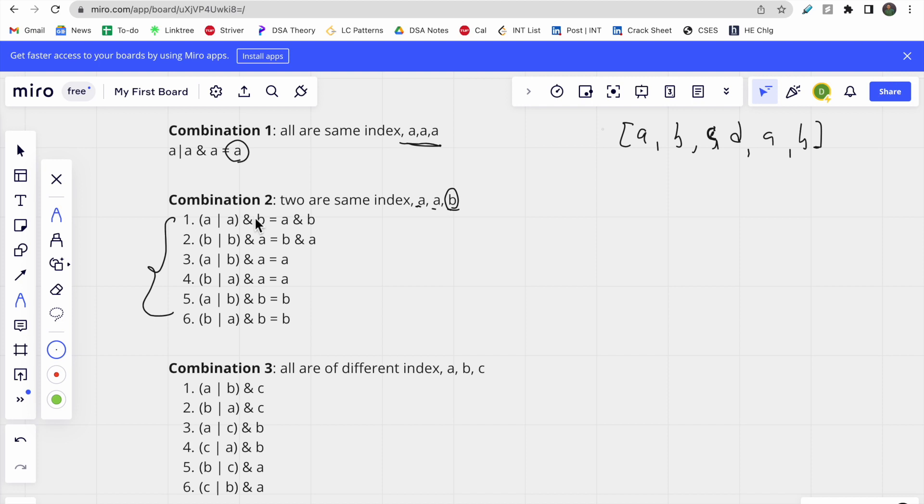The second situation is when two numbers are the same and one is different. There are six possible combinations for this triplet type. For example, (a OR a) AND b gives a AND b, and (b OR b) AND a gives b AND a. When you perform XOR of all these results, they nullify because a XOR a equals zero. So this combination type results in zero.